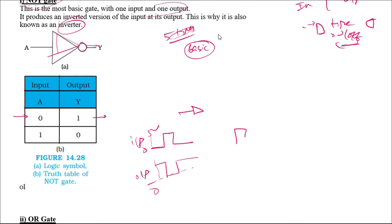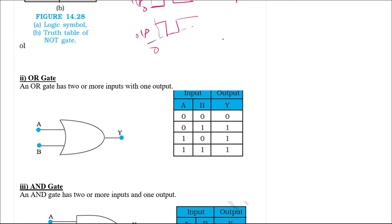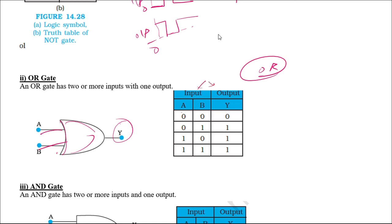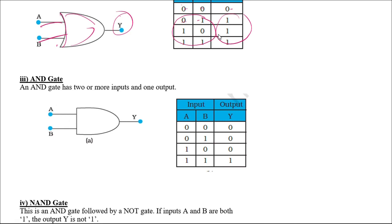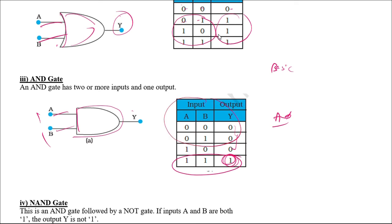Moving to the next gate: the OR gate. The OR gate has two inputs and one output. When both inputs are zero, the output is zero; when either input is one, the output is one. Similarly, the AND gate is represented like a D-shape with two inputs and one output. In the AND gate, only when both inputs are one is the output one; even if one of them is zero, the output is zero. Remember the input-output characteristics and how each gate is represented.